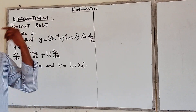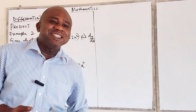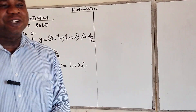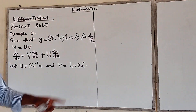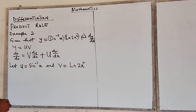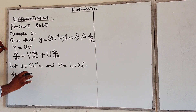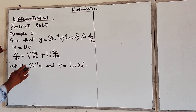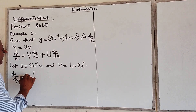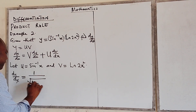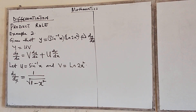In our previous classes, we have seen the derivative of inverse trigonometry functions and also logarithmic functions. Let's find du/dx. When you differentiate sine inverse of x, it gives 1 over the square root of 1 minus x squared. That's the du/dx.